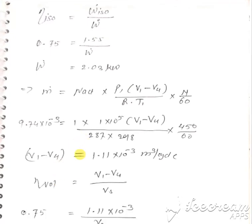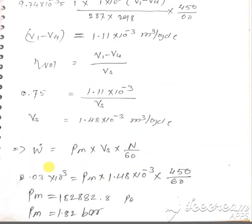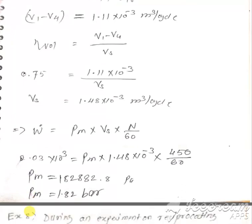We also have to calculate Vs. Volumetric efficiency = (V1 − V4) / Vs, so we first calculate V1 − V4 using: M-dot = P1 × (V1 − V4) / (R × T1) × N / 60. From this we calculate V1 − V4, then from volumetric efficiency we calculate Vs. Finally, putting Vs into W-dot = Pm × Vs × N / 60, we solve for Pm.